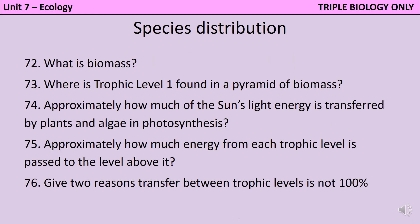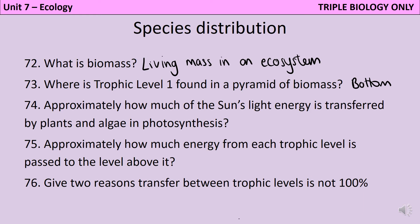Biomass is the mass of all of the organisms living in an ecosystem, and when you draw a pyramid of biomass, the first trophic level containing the producers goes at the bottom. About one percent of the sun's light energy is actually absorbed by plants and algae and transferred in photosynthesis, but more like ten percent is transferred between the following trophic levels, although this is an average and varies massively depending on the particular food web.